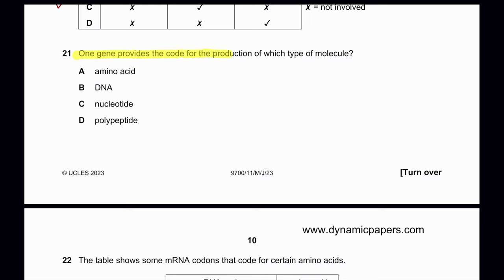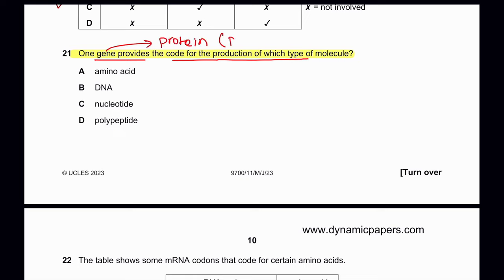Question 21: One gene provides the code for the production of which type of molecule? A gene codes for a protein, and a protein is a polypeptide. So D is the correct answer.